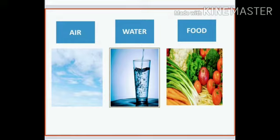Here are the pictures of these three things. Number one: Air. Number two: Water. Number three: Food. These three things are important for all the living things including plants, animals and human beings.